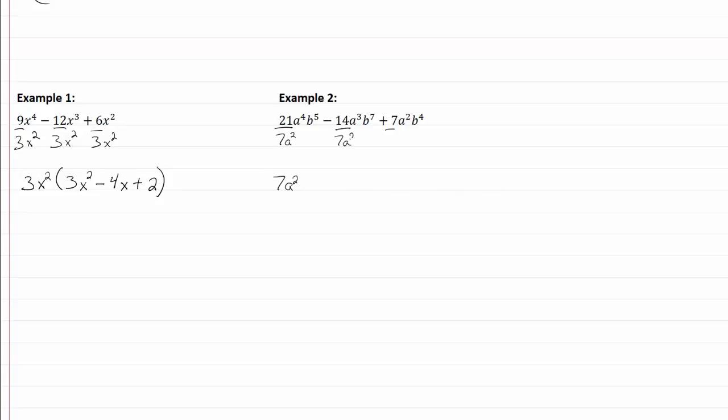And it looks like they all have a b in common also. My lowest exponent for my b is a four, so we're dividing by b to the fourth also.